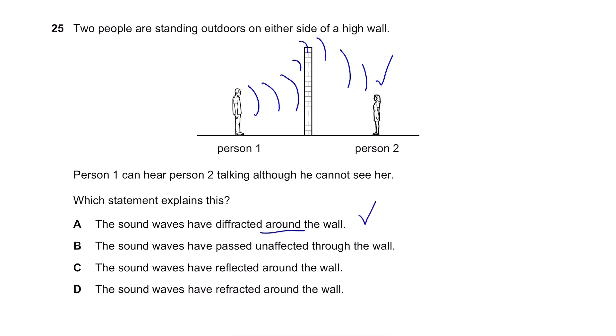For B, the sound waves have passed unaffected through the wall. Okay, obviously, the sound waves are not gonna go through the wall, that doesn't make sense. It's not magic. So nope. The sound waves have reflected around the wall. If it reflects, it means that it's going back to this person, so the person 2 will not be able to hear the sound. The sound waves have refracted around the wall. No, for this, we specifically used the word diffraction instead of refraction, so it's A.